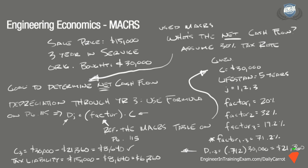Adjusting to account for the 30% tax rate, we find that the net cash flow is $6,360 times 0.70, which is equal to $4,452. So the net cash flow from the sale of the piece of equipment is $4,452.